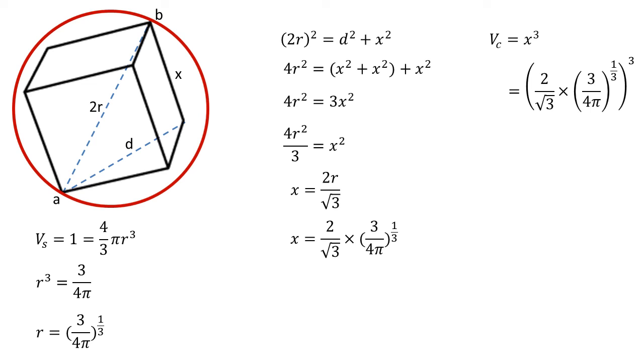Expanding this means we're going to cube both of those fractions because they're multiplying together, so that gives us 8/(3^(3/2)) for the first part. The cube and the cube root cancel out to give 3/(4π) for the second part.